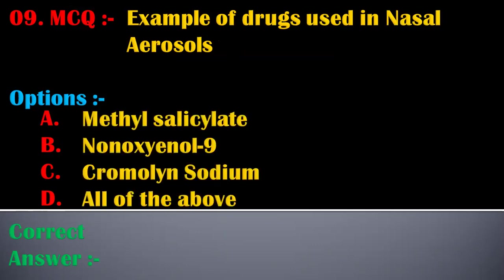The ninth MCQ is: example of drugs used in nasal aerosols — options are: A) methyl salicylate, B) nonoxynol-9, C) chromolin sodium, D) all of the above. The correct answer is C, chromolin sodium. Chromolin sodium is an example of a drug used in nasal aerosols.